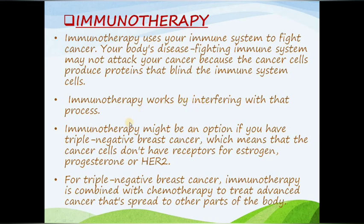Immunotherapy might be an option if you have triple negative breast cancer, which means the cancer cells don't have receptors for estrogen, progesterone, or HER2. For triple negative breast cancer, immunotherapy is combined with chemotherapy to treat advanced cancers that have spread to other parts of the body.